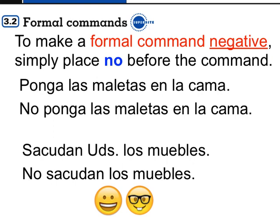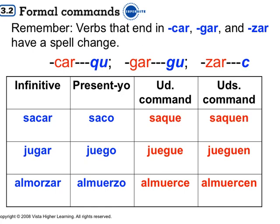That should make you very happy. But remember the verbs ending in -car, -gar, and -zar — we continue to have a spelling change in these commands because we're working with the vowel E. For example, sacar: saco — saque usted, saquen ustedes. Jugar: remember the yo form stem changes to juego — drop the O but also apply the spelling change — juegue usted, jueguen ustedes. Almorzar also stem changes and is a -zar verb — almuerce usted, almuercen ustedes.